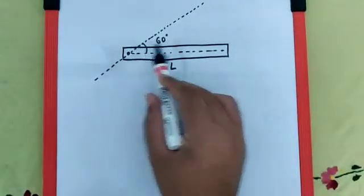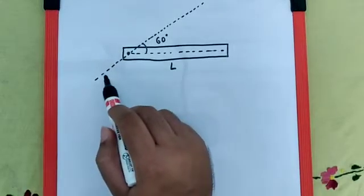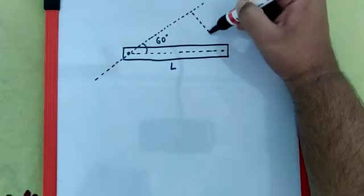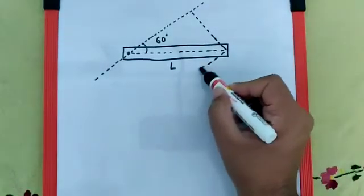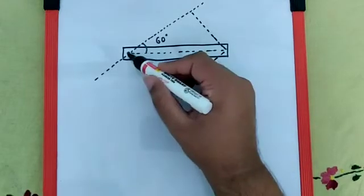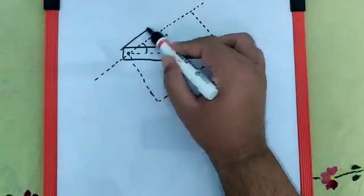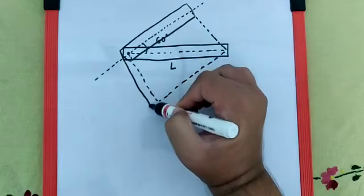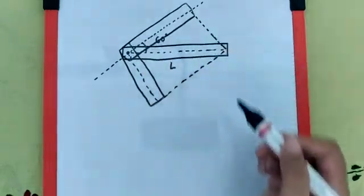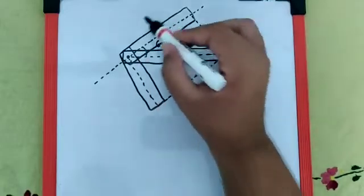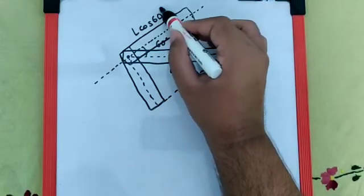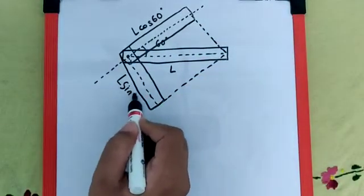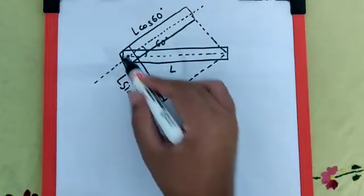If we want to find the moment of inertia of this rod, the axis has to be perpendicular to that rod. So if we resolve the rod into two components: one component will be along the axis, which is L cos 60, and the other component will be perpendicular to the axis, which is L sin 60.